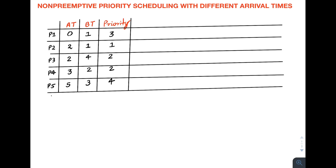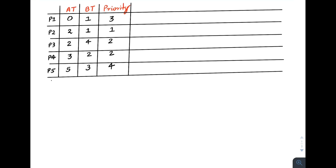Let's start drawing the Gantt chart. At time zero, only one process is present — P1 — so we schedule P1. Since this is non-preemptive, P1 runs from zero to one. At time one, there is no process in the ready queue because P2 and P3 arrive at time two. So from one to two the CPU remains idle.